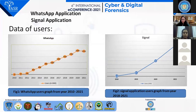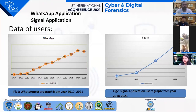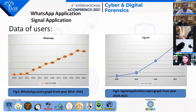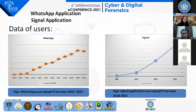In front of us there are two figures. The first figure is of the WhatsApp graph. In 2010, there were only 10 million users of WhatsApp, which raised to 2,000 million in 2020 and fell down to 1,950 million users in 2021. The next figure is of Signal Application. In 2018, there were only 0.35 million users of Signal Application, which rapidly increased and reached 40 million users in 2021.